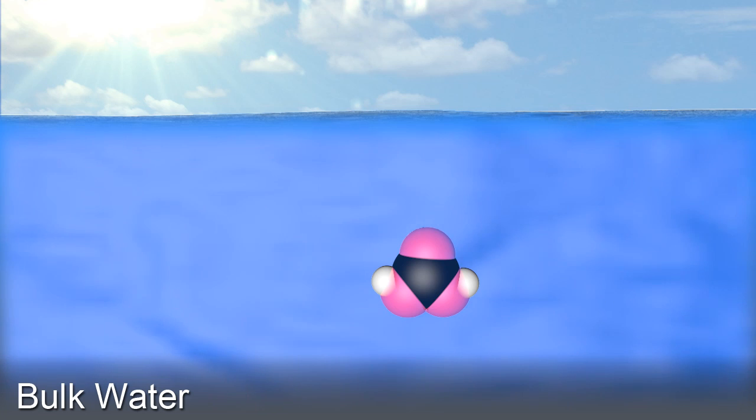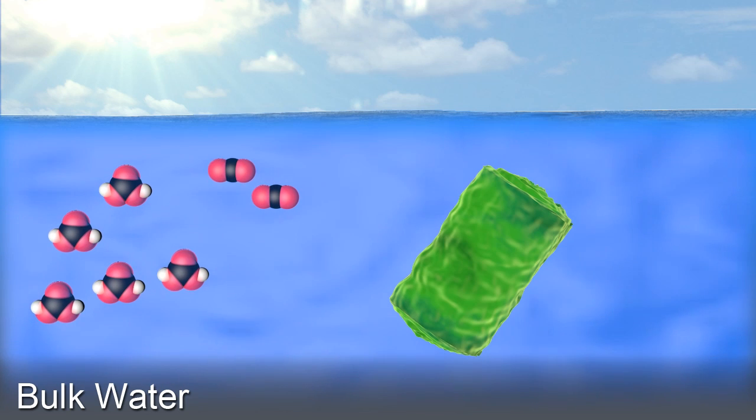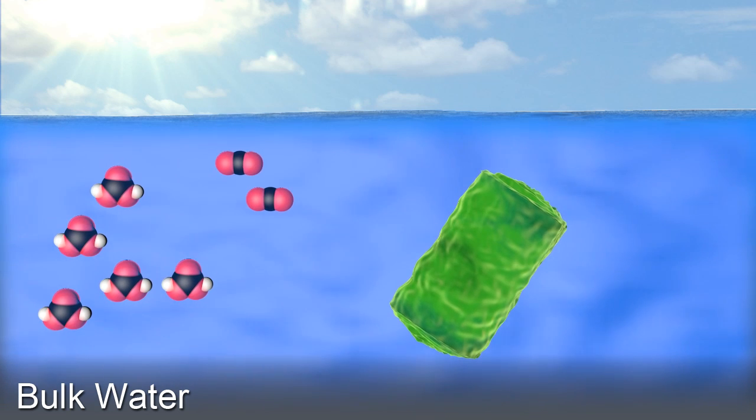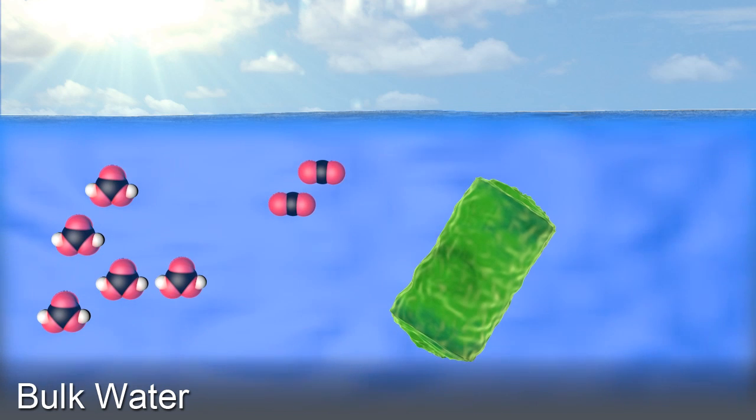The Sea Surface Microlayer is populated by phytoplankton, which are photosynthetic microbes. In order to produce energy and grow, they need a carbon source.